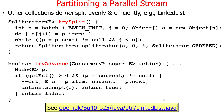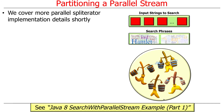Likewise, tryAdvance is also less efficient for linked lists — it has to do some work with pointers to accept each element. So not surprisingly, linked lists don't split very well, whereas arrays split very well, and other data structures fall somewhere in between. Generally, anything that can be split in constant time will split well and evenly. We'll talk more about these things later.